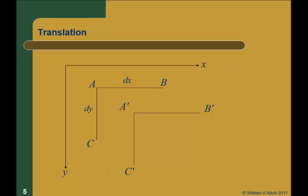So when something displaces, one thing that's happening is translation — point A moves to A prime, point B moves to B prime, and C moves to C prime. If there's no distortion, it's translation. That's like a pitcher throwing a knuckleball — it's going towards home plate, it's translating. Nothing else is happening except translation.